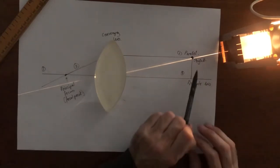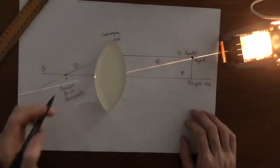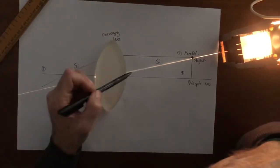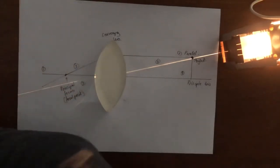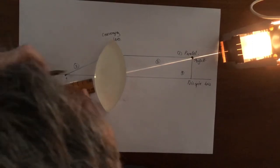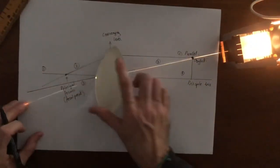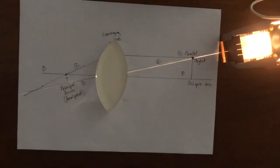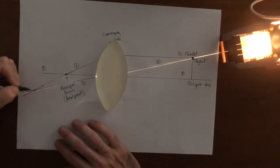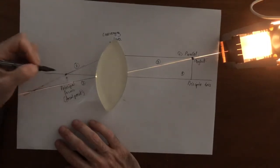So this is one of the rays we can use to find the position of the image. The other one is a line that goes directly through the geometrical center of the lens — through this point right in the middle. Line number three is another ray, and what happens if it goes through the geometrical center is it will come out in a straight line. It won't be deviated. We can see that the rays have focused to a point here, these two rays, outside the principal focus.